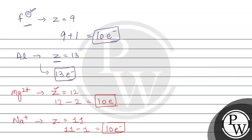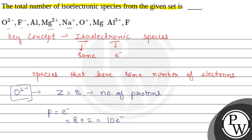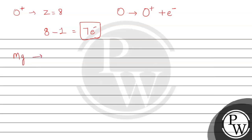Next is oxygen positive (O⁺). For oxygen the atomic number is 8. Oxygen positive indicates that one electron has been removed. The neutral oxygen atom has 8 electrons, and removing one electron means it acquires a 1 positive charge. So it will have 7 electrons in total. After that, magnesium is neutral — there is no charge on it — so its atomic number is 12, meaning the number of protons and electrons are equal to the atomic number. Total number of electrons in neutral magnesium is 12 electrons.